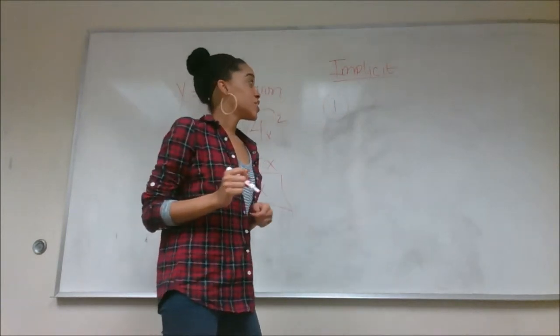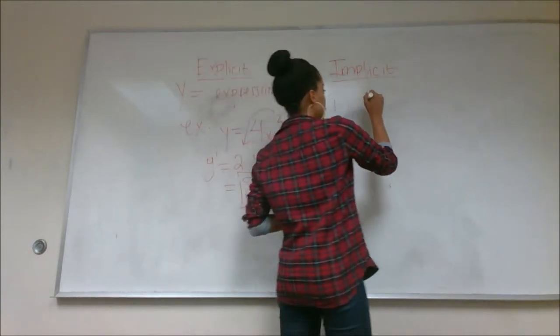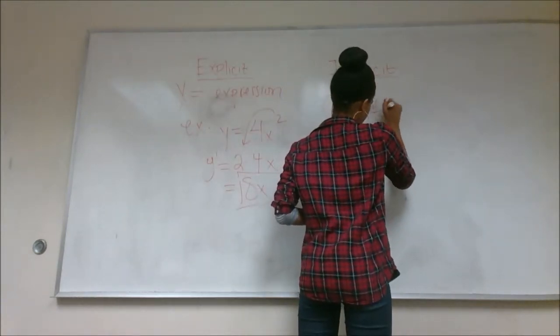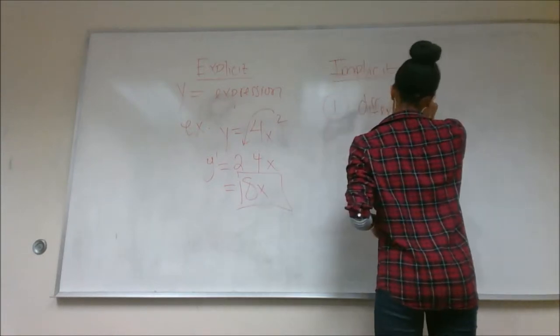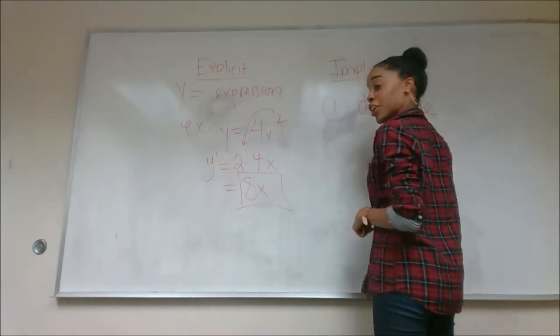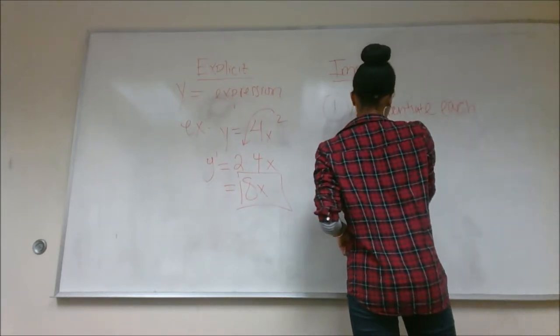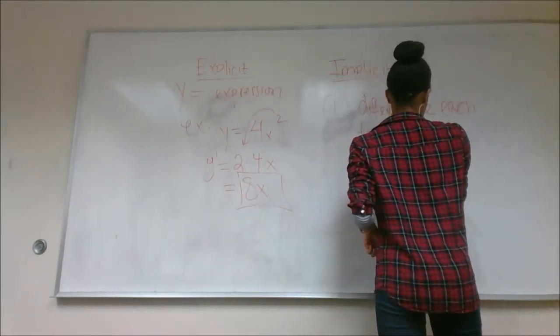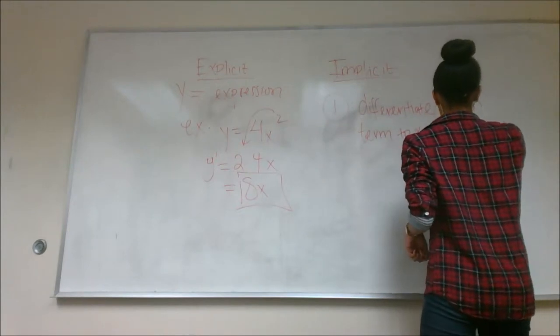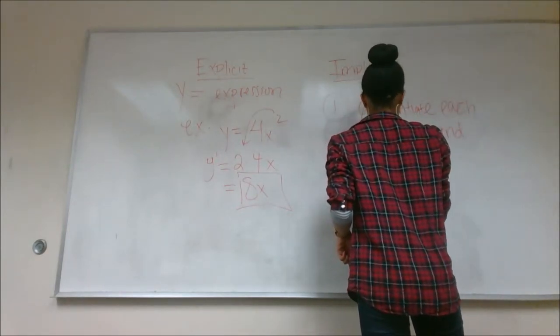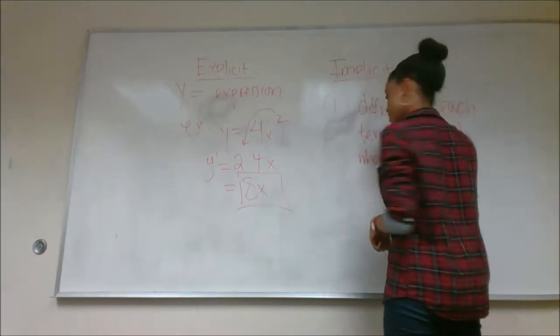For implicit, what you're going to do is you're going to differentiate each term with respect to x. And whenever you see a y term, you're going to multiply it by dy over dx.